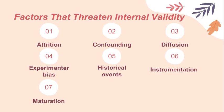The seventh is maturation. This describes the impact of time as a variable in a study. If a study takes place over a period of time, it is possible that participants naturally change in some way — grow older, become tired — and it may be impossible to rule out whether effects in the study were due to time processes within the respondent, including growing older, growing hungry, or growing more tired.